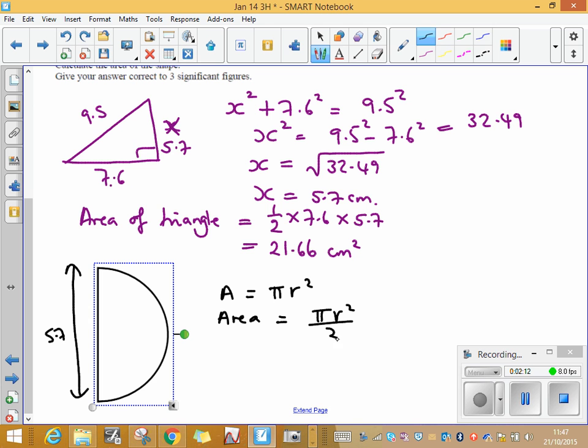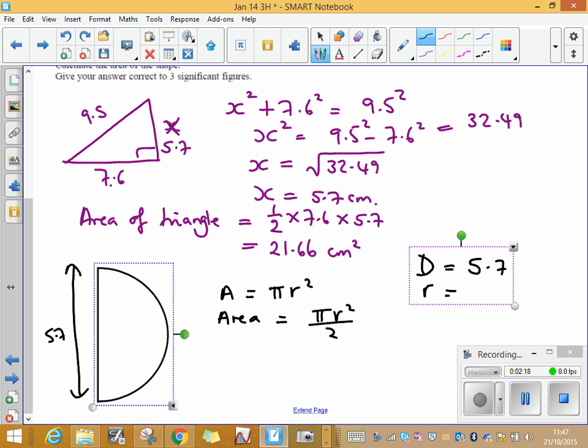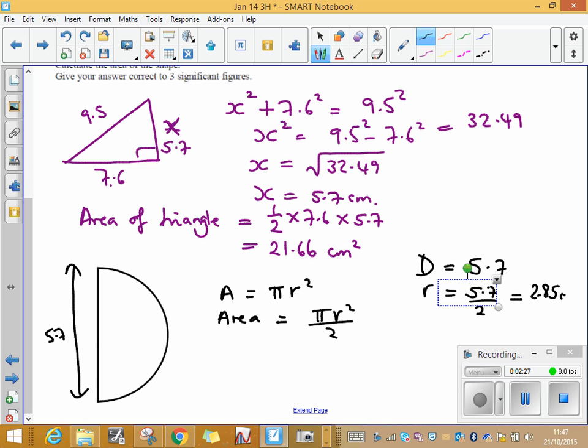Now if we look at the radius, the diameter of this circle is 5.7 which means that the radius of the circle is going to be 5.7 divided by 2 and that's 2.85 centimetres. So the area of my semicircle, just putting into this formula, is pi times r squared, well I've just said that r is 2.85 squared divided by 2.